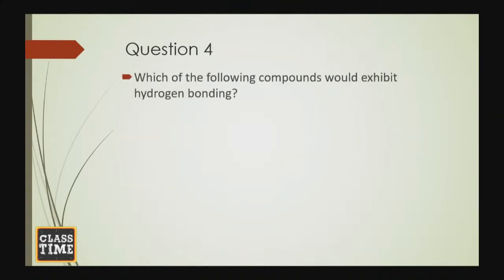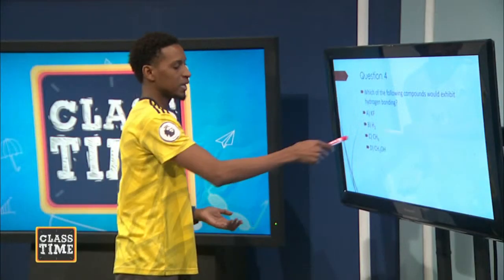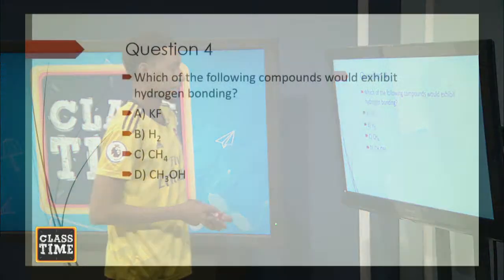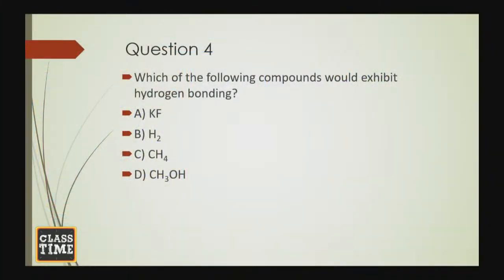Question 4: Which of the following compounds would exhibit hydrogen bonding? The options are potassium fluoride, hydrogen gas, methane, and methanol. The answer is methanol, because it has a hydrogen bonded to an oxygen, and that hydrogen can interact with the oxygen of another methanol molecule to generate a hydrogen bond. The answer is D.